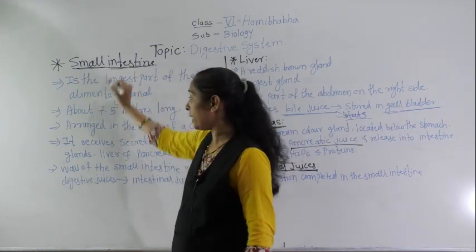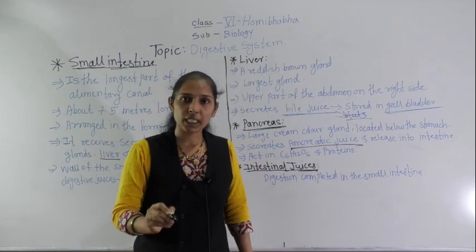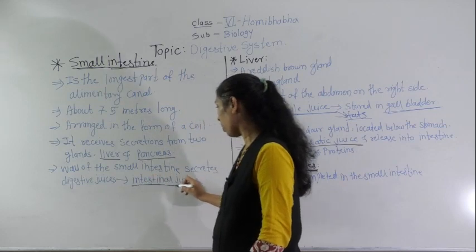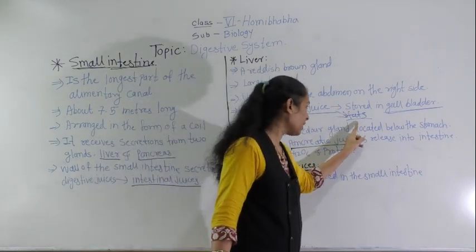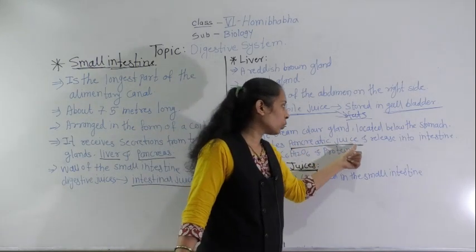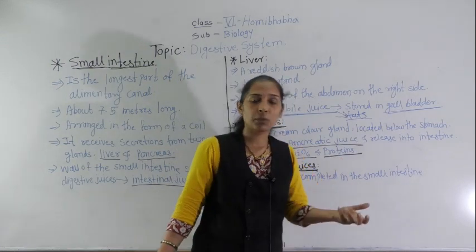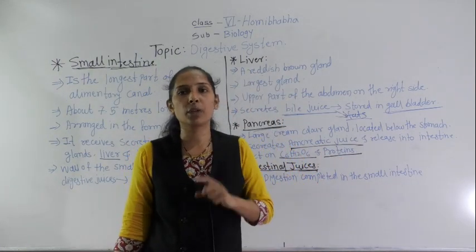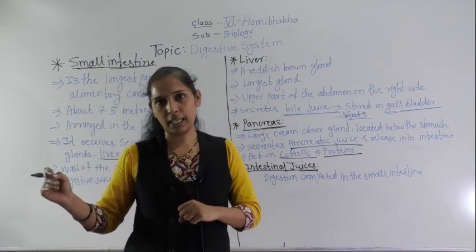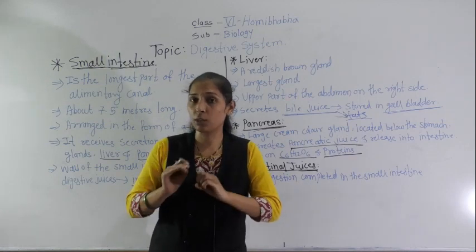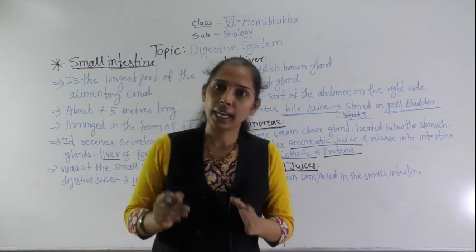To summarize: the small intestine receives secretions from the liver and pancreas. The liver secretes bile juice, which helps digest fats. The pancreas secretes pancreatic juice, which helps digest carbohydrates and proteins. Intestinal juices also help convert food into a simple and soluble form, completing the digestion process. In the next video, we will see how digested food gets transported to all parts of the body. Thank you.